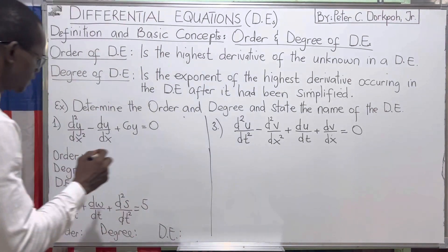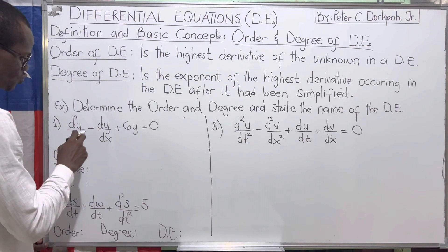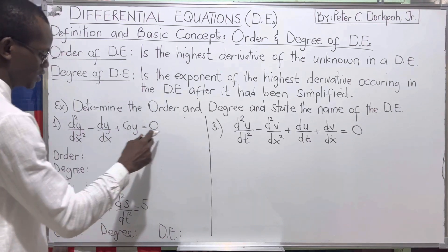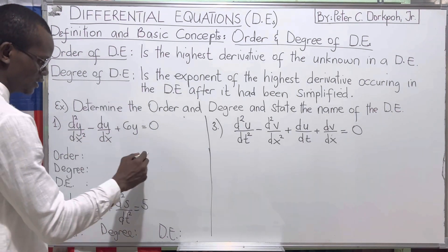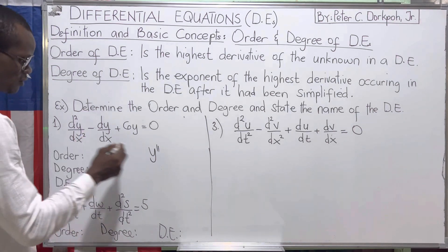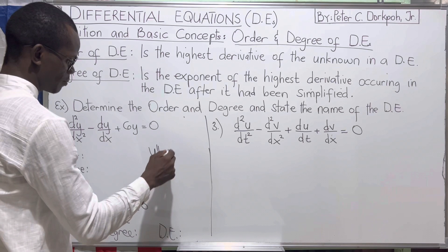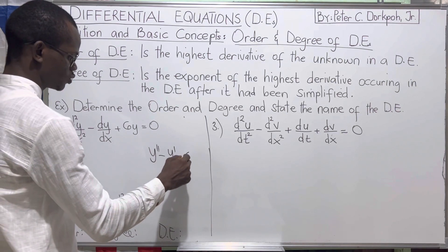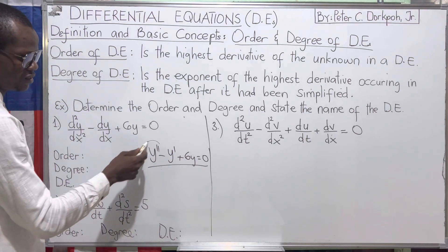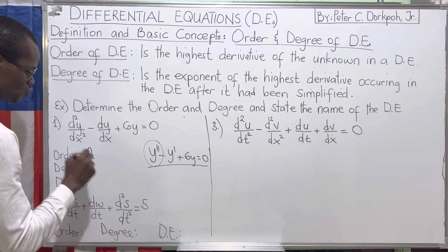For the first example: d²y/dx² minus dy/dx plus 6y equals 0. This d²y/dx² is the same as saying y double-prime — the second derivative — minus dy/dx is the same as y prime, plus 6y equals 0. We clearly locate the highest derivative, which is 2. So our order is equal to 2.